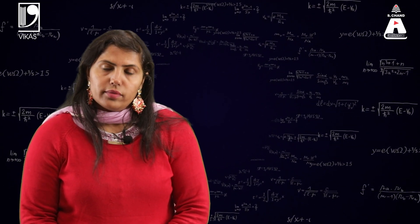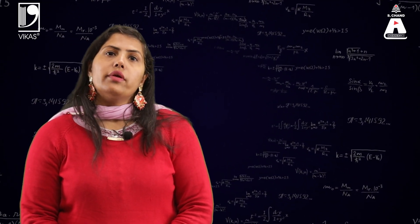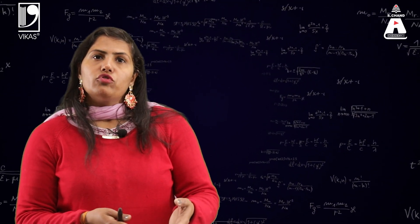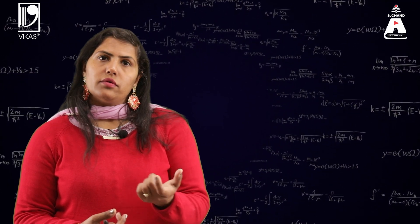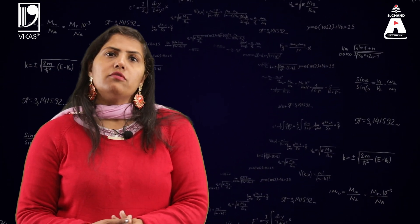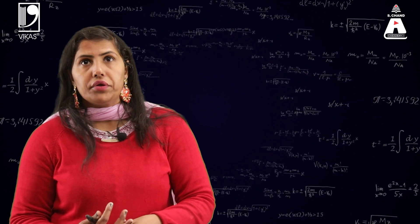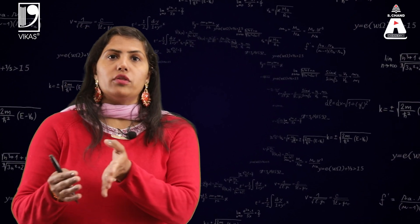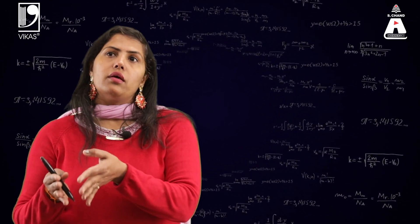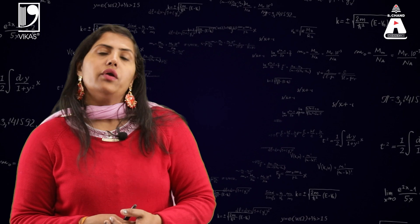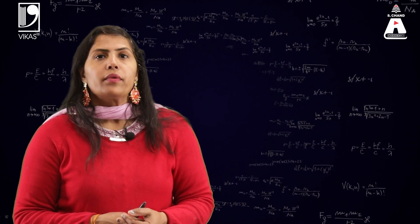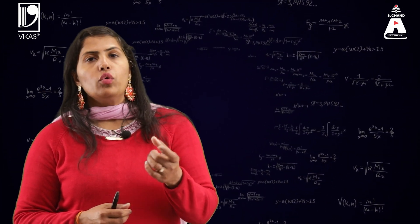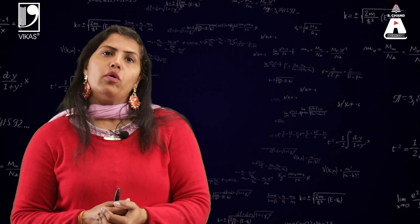Taylor and Maclaurin Theorem — they both are helpful for writing a function in series form. If we have any function, writing it in series form is sometimes very useful. For example, if we talk about continuity or convergence, we can relate function continuity to check the convergence of the series, and vice versa. Taylor and Maclaurin is the first series which expresses any function in series form.